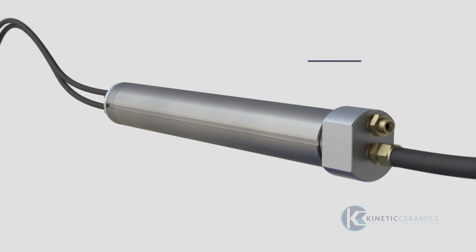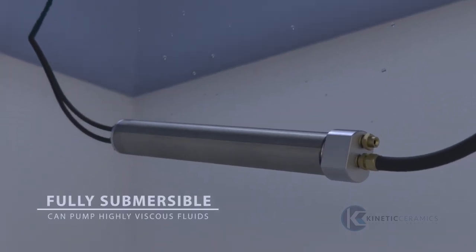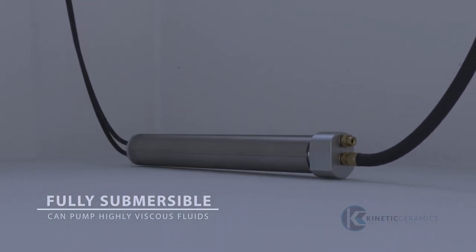The self-priming pump can operate remotely and be directly submerged in fluids. This resilient system can also pump highly viscous fluids and function in corrosive environments with little to no impact on performance.